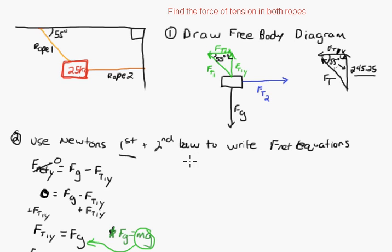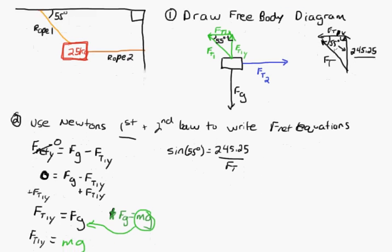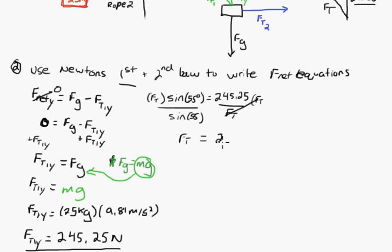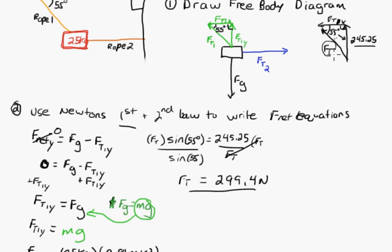The opposite side of the 55 degree angle is 245.25 N, and the hypotenuse is force tension one. I'll use the sine ratio: sine(55°) = 245.25 / FT1. Rearranging — multiply both sides by FT1, then divide by sine(55°) — gives: FT1 = 245.25 / sin(55°) = 299.4 newtons.